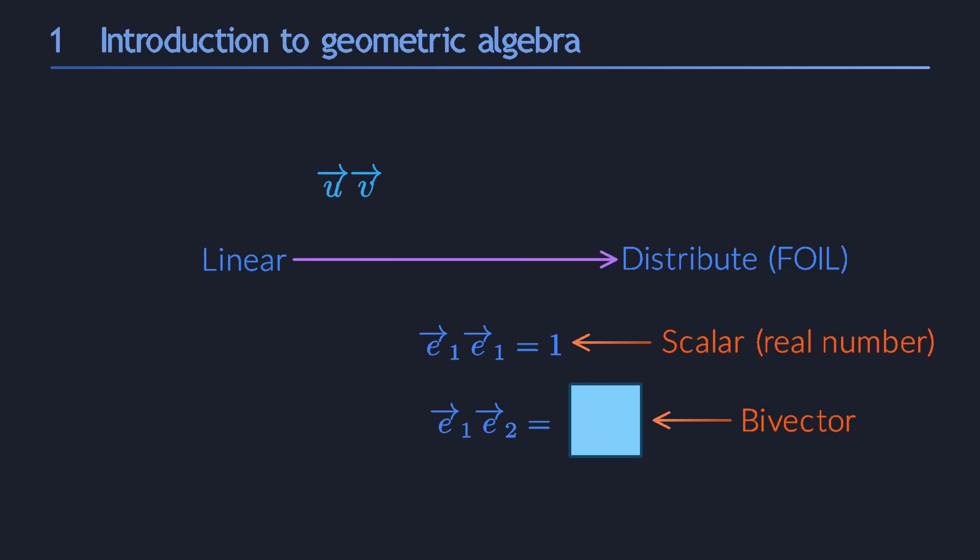More generally, whenever two vectors are perpendicular to each other, they multiply to a bivector, which you can think of as a little square shape for now. Those are the only rules. Parallel vectors get treated one way, and orthogonal ones get treated a different way.